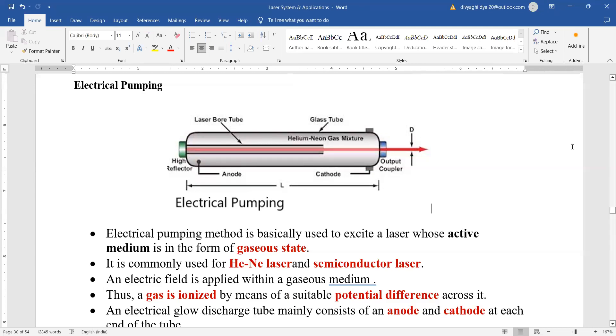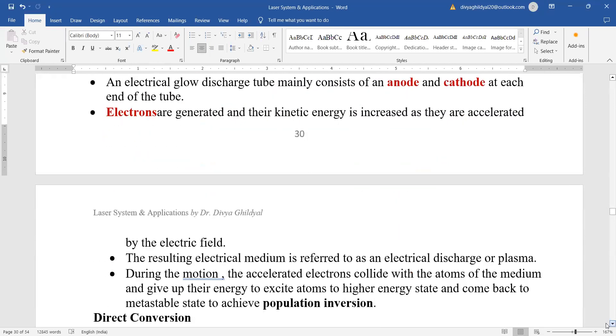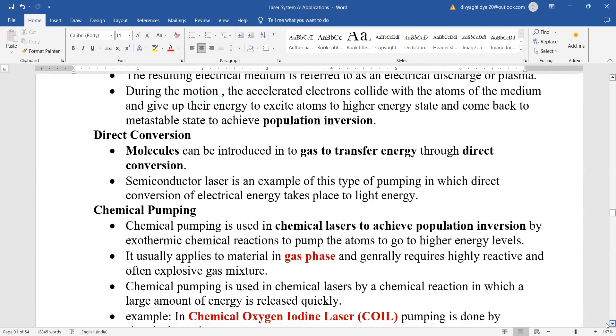An electric field is going to be applied within the gaseous medium and the gas will get ionized by means of suitable potential difference. Electrons will be generated and their kinetic energy will be increased as they are accelerated by the electrical field. The accelerated electrons will collide with the atoms of the medium and give up their energy to excite atoms to higher energy state and then come back to the metastable state. This helps in population inversion process.